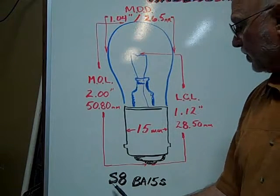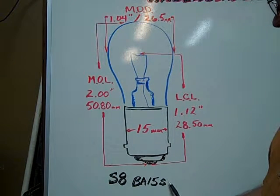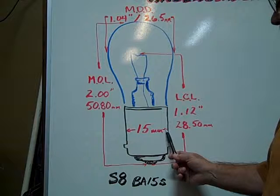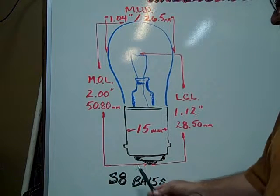The S8 BA-15S. S signifies single contact. The 15 signifies 15 millimeter diameter of the base. The pins are directly across from each other on the base.